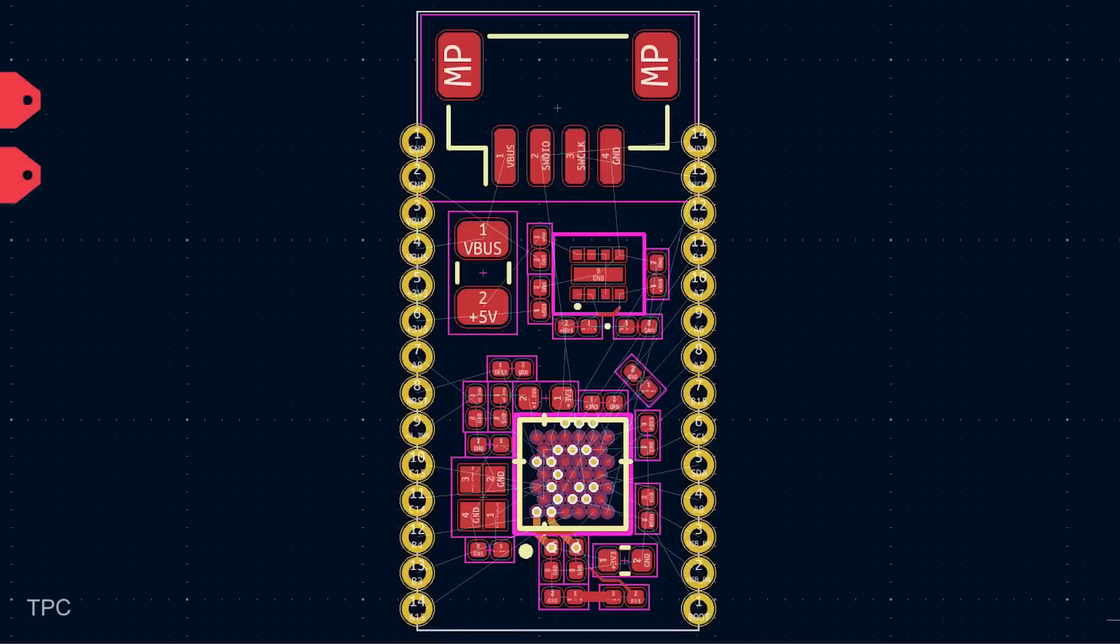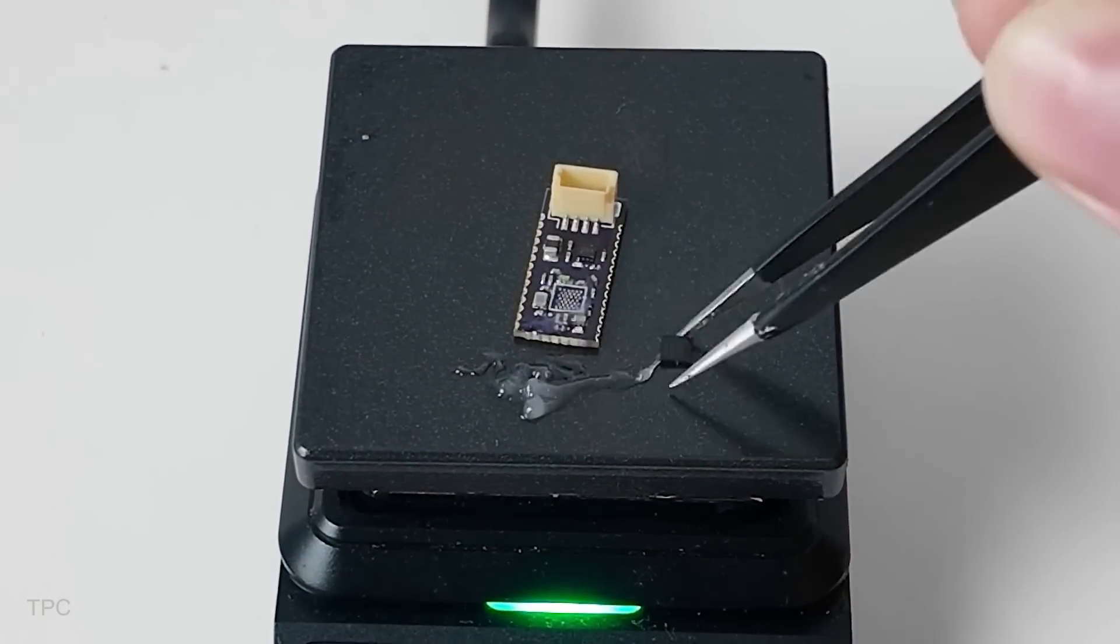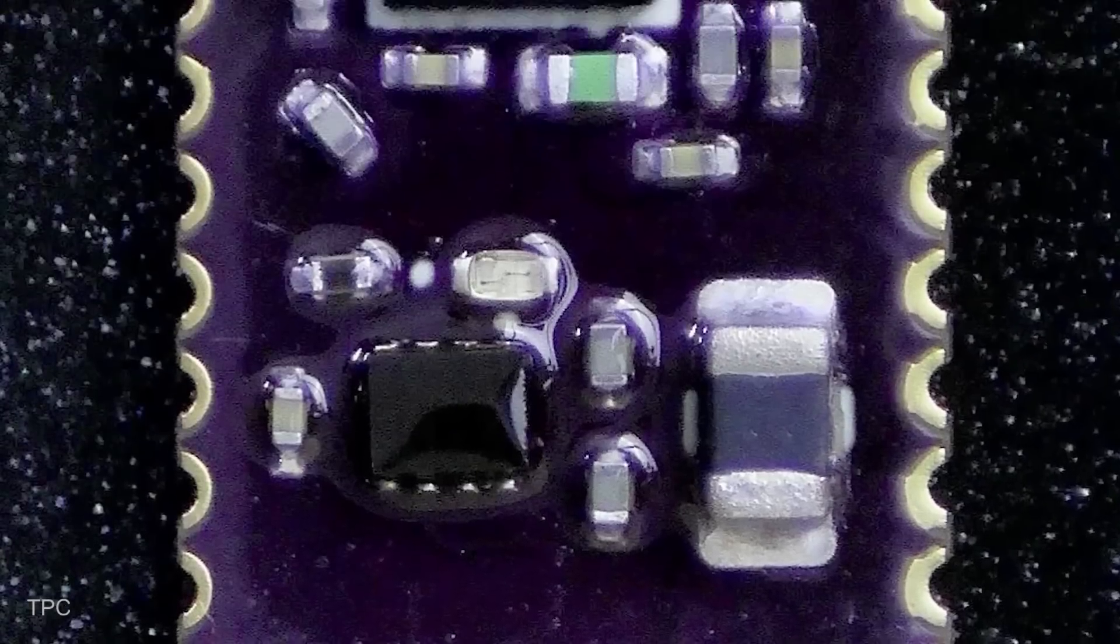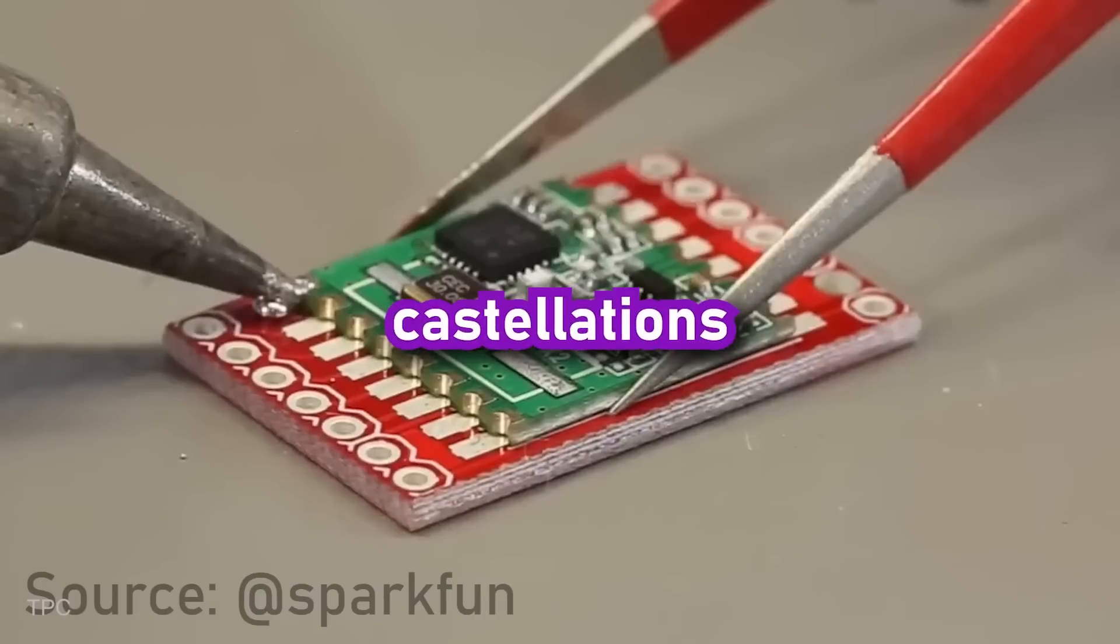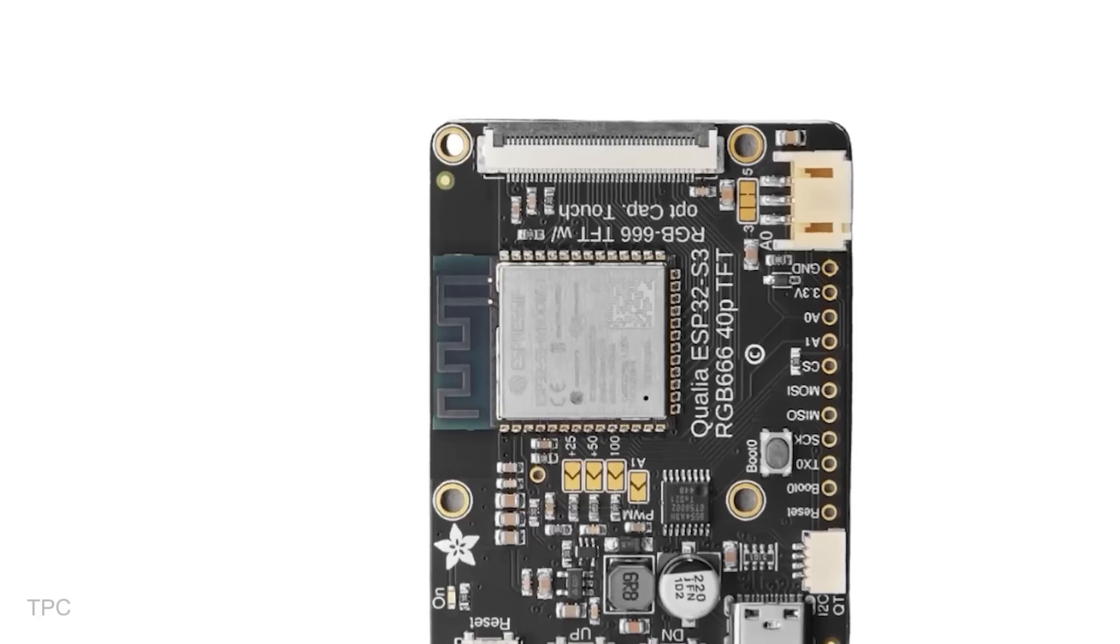Number 14. Hayes challenged himself to design one of the smallest STM32 development boards without compromising performance. Instead of using regular pin headers, he went with half-cut castellated holes for a low-profile design.